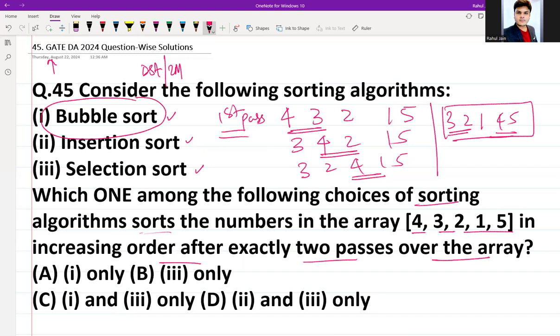In the second pass, again 3 and 2 will be compared. So second pass starts from here. So 2 and 3 will be there, and after that 1 and 3 will be compared. So 2, 1, 3, 4, 5. Now everyone is at correct place. So it is not sorted. After second pass this is my result using bubble sort. So 1 is not the answer. So if 1 is not answer, option A got cancelled and option C got cancelled. Now option B and D are remaining.